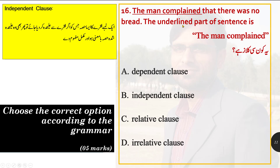Option number 16: 'the man complained that there was no bread.' The underlined part is 'the man complained.' What type of clause is this? Dependent clause, independent clause, relative clause, or irrelative clause? An independent clause is a part of a sentence that, if separated, still remains meaningful and complete. 'The man complained' remains meaningful on its own, so it is an independent clause. We select option B: independent clause.